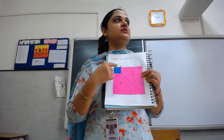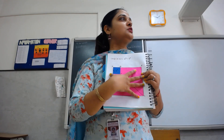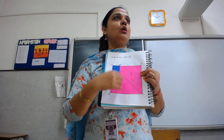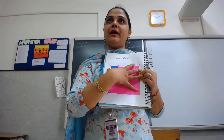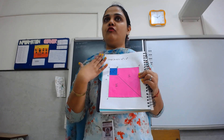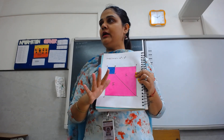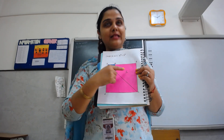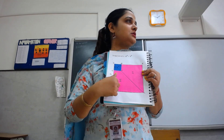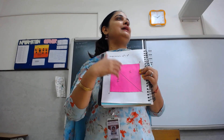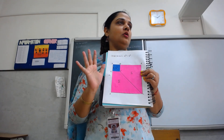When I am placing this b squared — that means the blue one on this pink one — the remaining area, portions one and two, is showing a squared minus b squared. So my task is to arrange these two portions in such a way that they represent (a + b)(a - b).